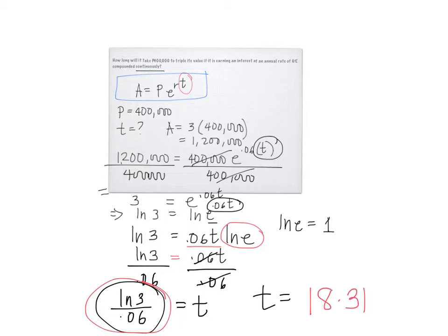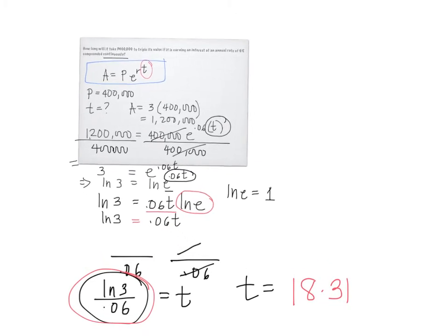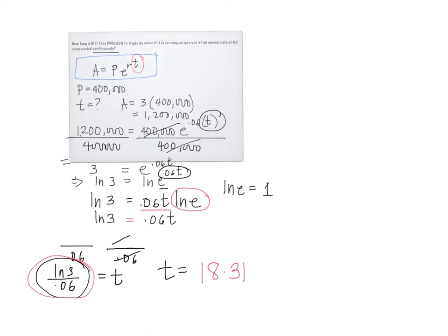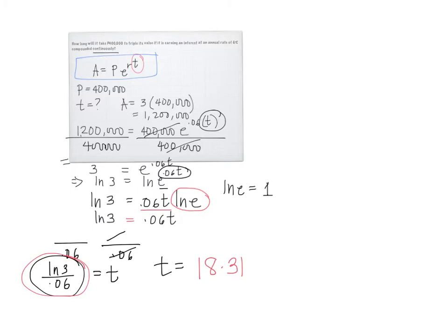18.31, so approximately this is 18 years. The answer must be about 18 years. It will take 18 years to triple the value of 400,000.